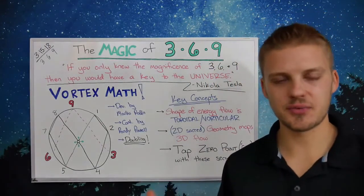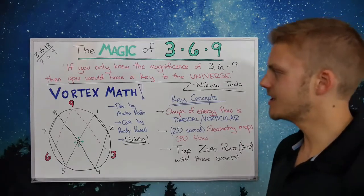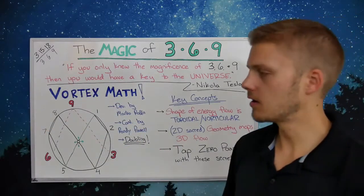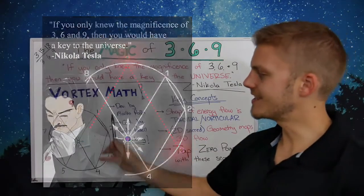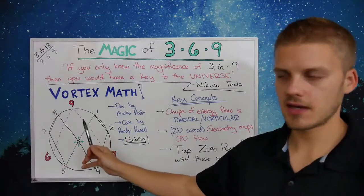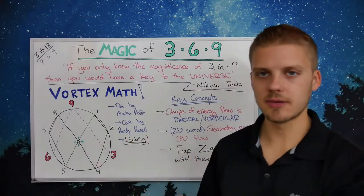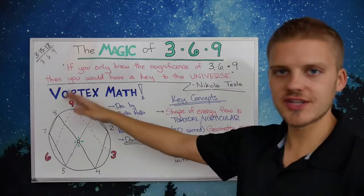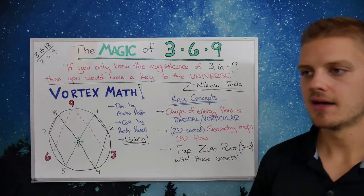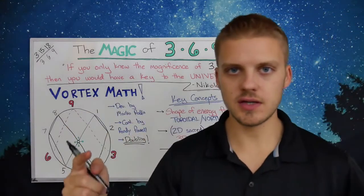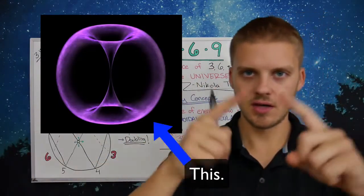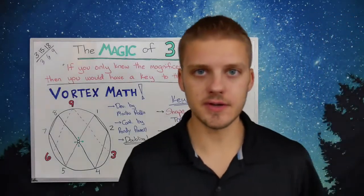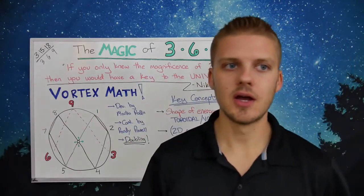To discuss the magic of 3, 6, and 9 and this particular numerology, I'm going to introduce a topic called vortex math. But before we get into the diagram, I want to go over two key concepts. The first is that the shape of energy flow within our universe is toroidal — it's a torus, or vorticular. That's the shape of basically everything.